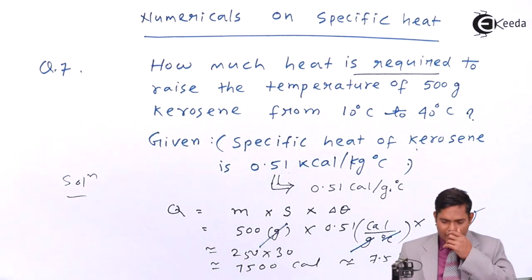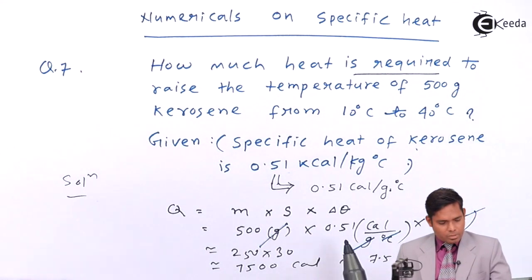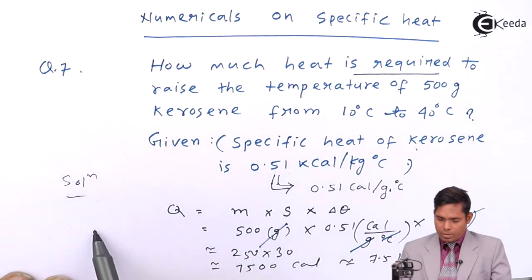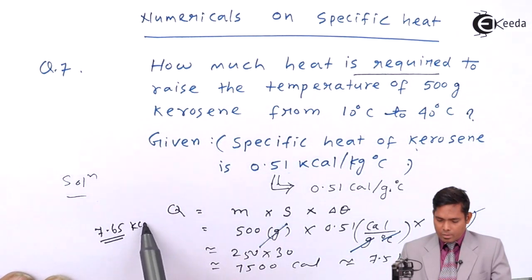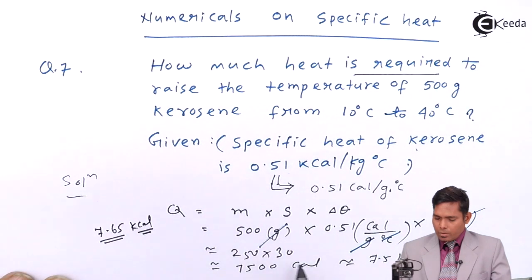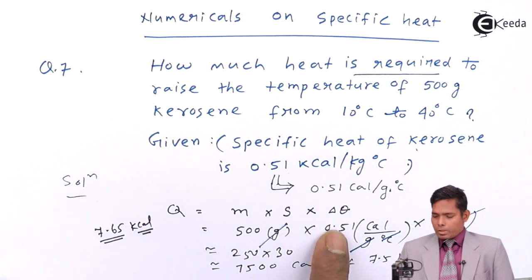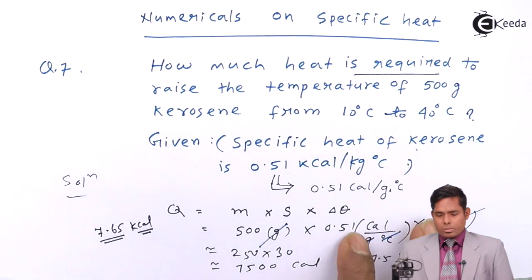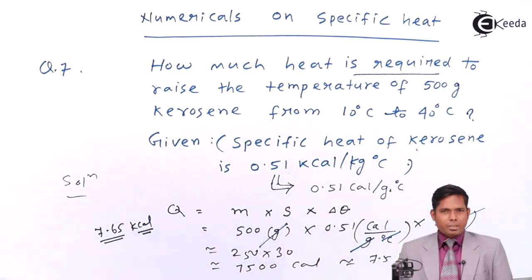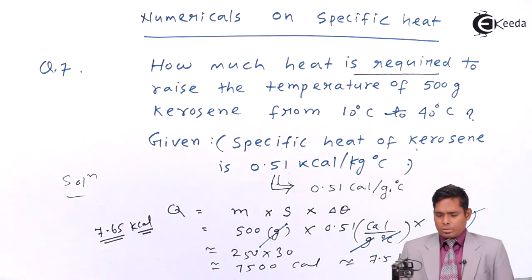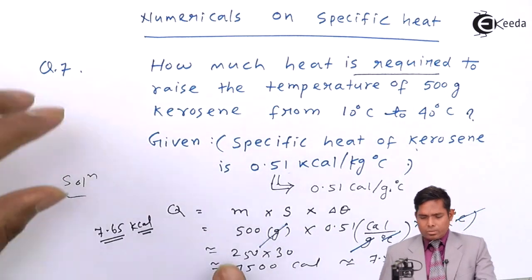If you take the exact value of 0.51, the answer is 7.65 kilocalorie. So how are we getting 7.5? Because we have taken 0.51 as approximately 0.5. This 0.01 is also important because the number being multiplied is large, so it gives you a significant difference. Anyway, 7.65 kilocalorie is the answer to this question.